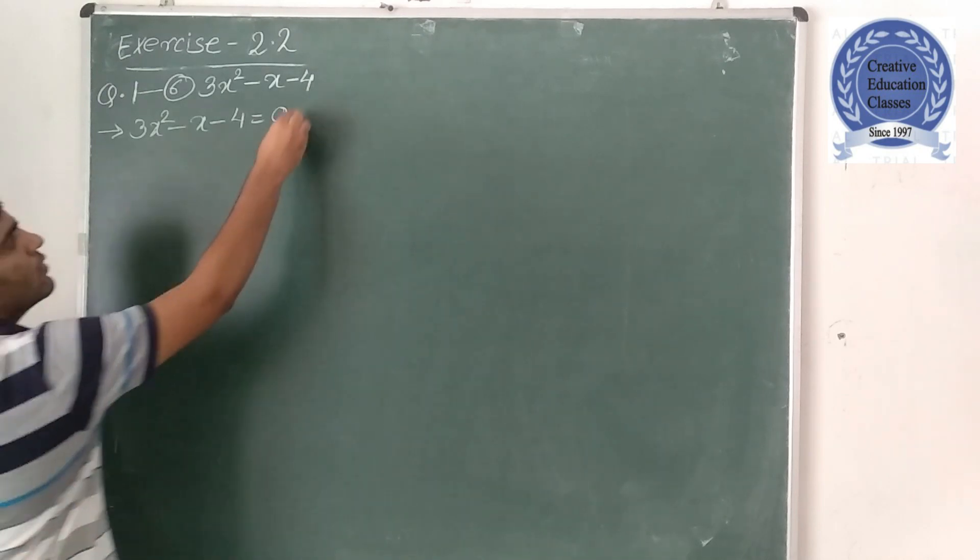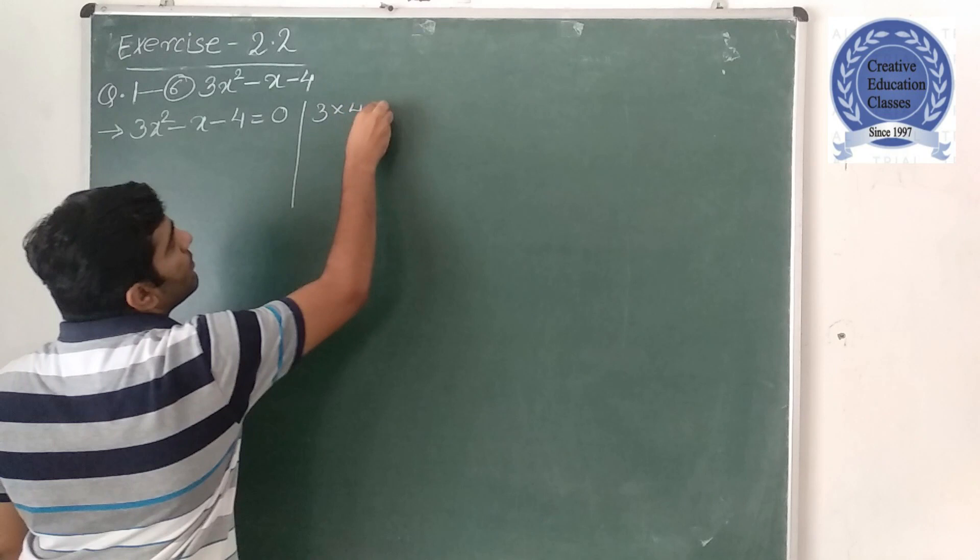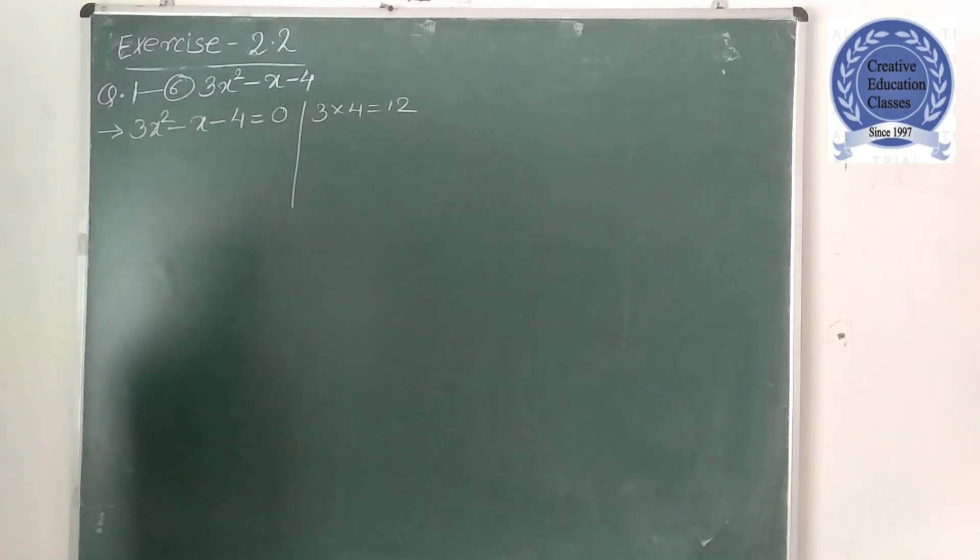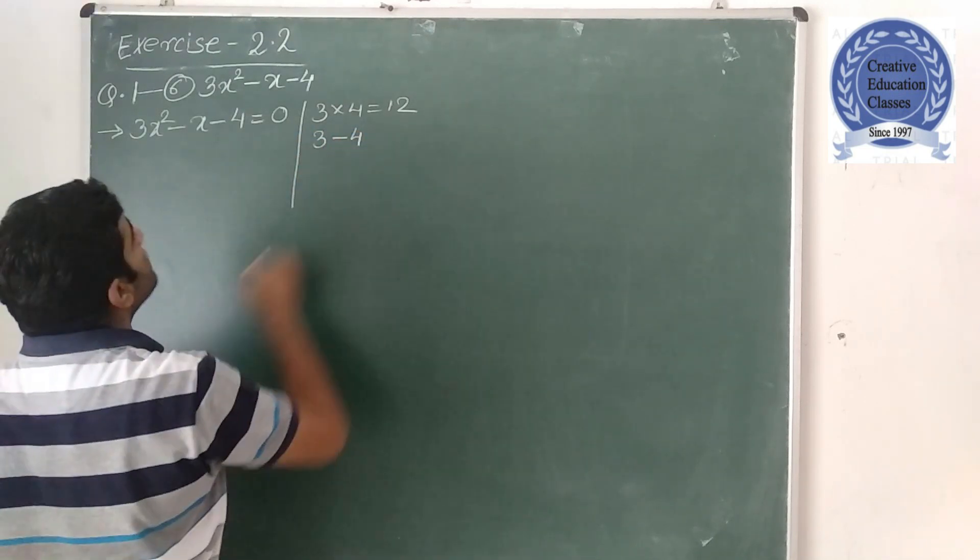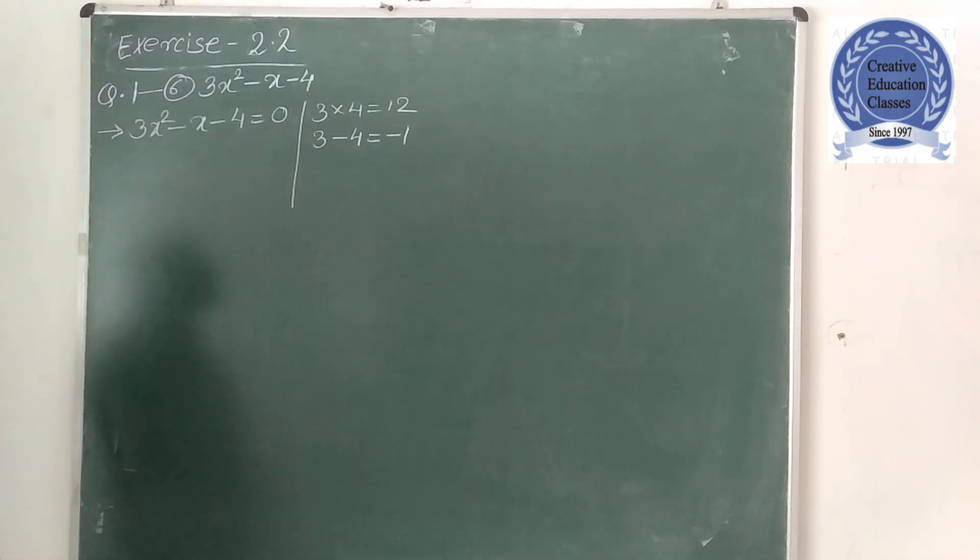Split this. So 3 into 4 is 12, so 3 minus 4, how much? Minus 1, because I needed minus 1 only. See here, nothing is there with x, then it is minus 1.